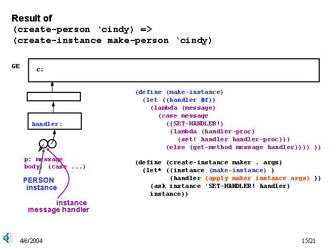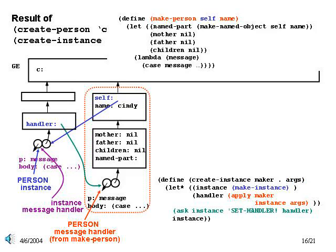The next job of createInstance is to apply the makePerson procedure, with instance and name as arguments. So now the makePerson procedure is run. Note that self is bound to our overall instance object, in addition to name being bound to Cindy, in the local frame resulting from the call to makePerson. Inside makePerson, we have a local let expression which drops a frame to hold variables mother, father, children, and namepart. Finally, in the body of the let, we evaluate the lambda expression, which creates the message handler procedure, giving us all of the methods defined for the person class. Together, we see that the makePerson call gives our instance both the local state and the methods specified by our class definition for person.